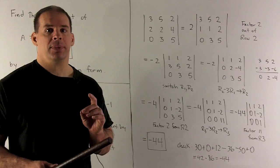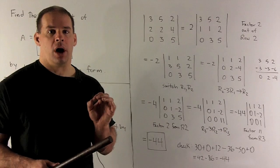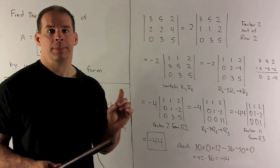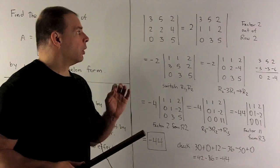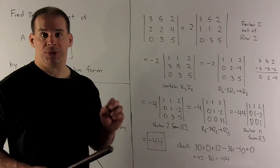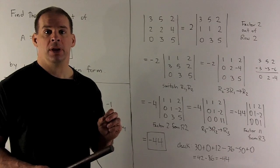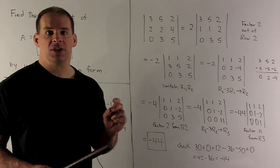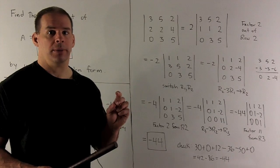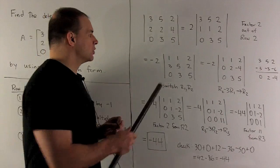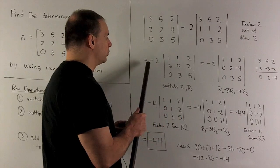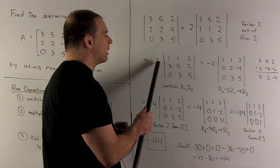Next step: I want to put that 1 in the upper left-hand corner, so I'm going to switch row 1 and row 2. The effect on the determinant is we multiply by minus 1. After the switch, we're left with a minus 2 out in front.